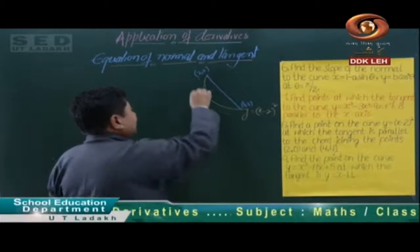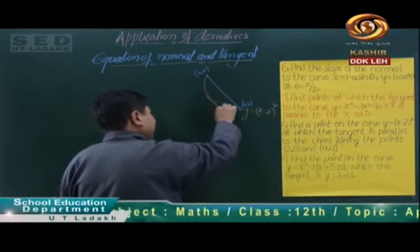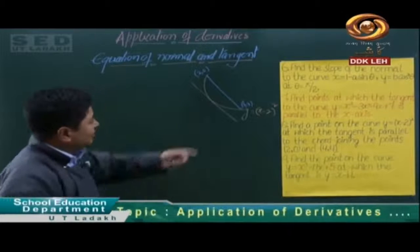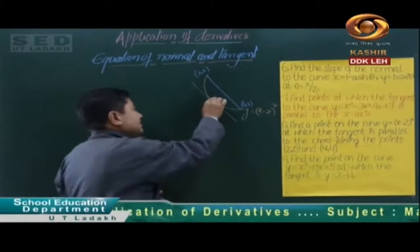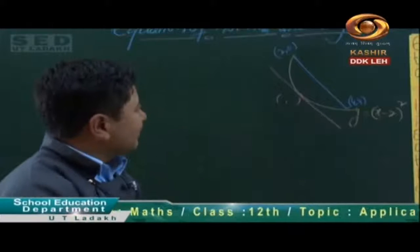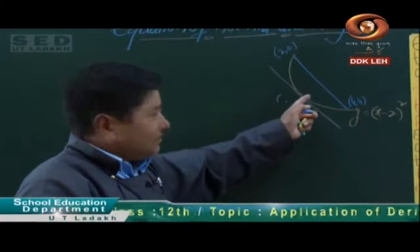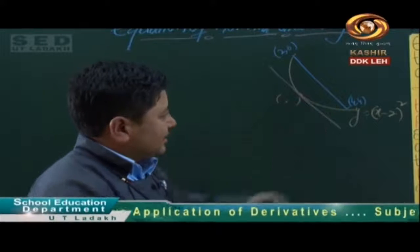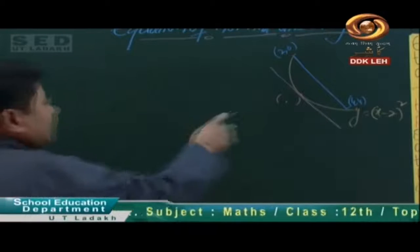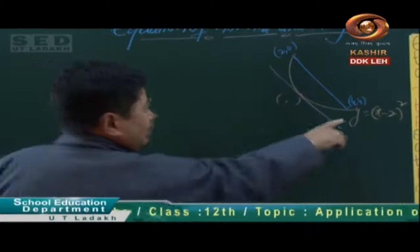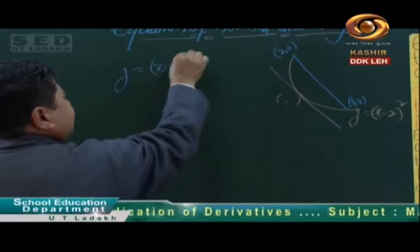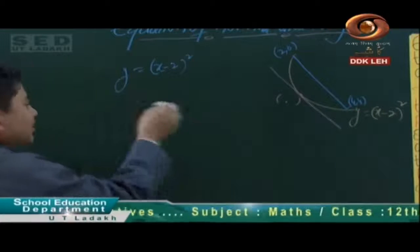If we have a chord here which is parallel to another chord, then we have to find the point of contact. This is our chord, this is our tangent. The curve equation is y is equal to (x minus 2) whole square. This is our equation of the curve.